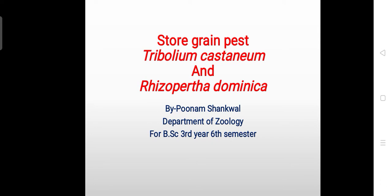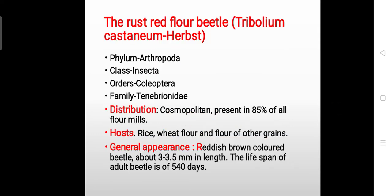The rust red flour beetle belongs to Phylum Arthropoda, Class Insecta, Order Coleoptera, and Family Tenebrionidae. It is cosmopolitan in distribution and present in 85% of all flour mills.